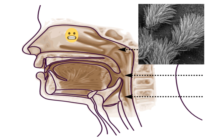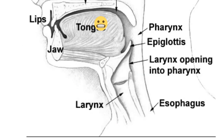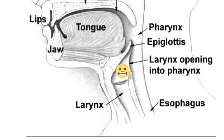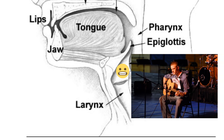The air and oxygen next moves to the pharynx, which is located at the back of the mouth. From the pharynx, it moves to the larynx, which is commonly called the voice box. The voice box makes sound when air passes over the vocal cords.